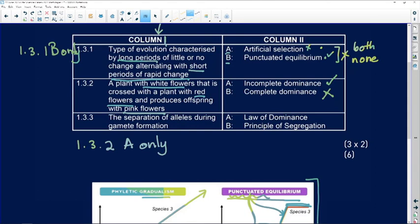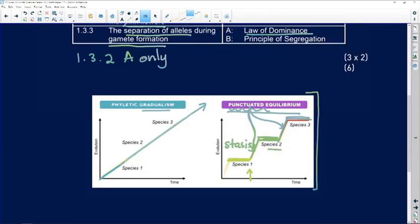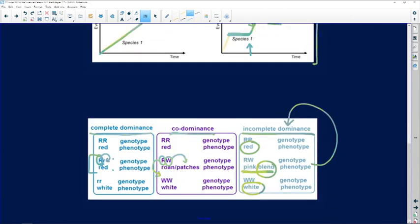1.3.3 separation of alleles during gamete formation. Is this the law of dominance? And we've just gone through the law of dominance. Is this the law of dominance where one allele is going to be completely dominant over the other allele in the heterozygote condition?